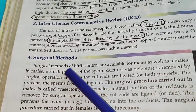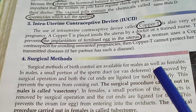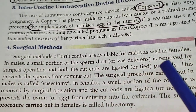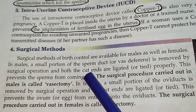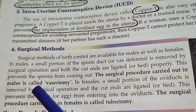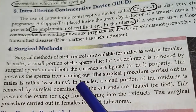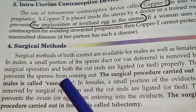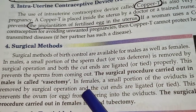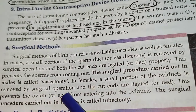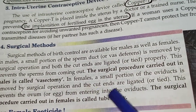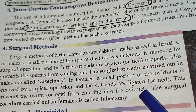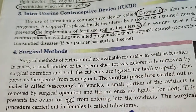Lastly, surgical methods are available for both males and females. In the case of the male, a small portion of the vas deferens is removed by an operative method and both the cut ends are ligated or tied properly. This prevents sperms from coming out. The surgical method carried out in the male is known as vasectomy. In the female, a small portion of the oviduct is removed by an operative method and the cut ends are ligated. This is known as tubectomy. This prevents the egg from entering the oviduct. So vasectomy and tubectomy are the two surgical methods.